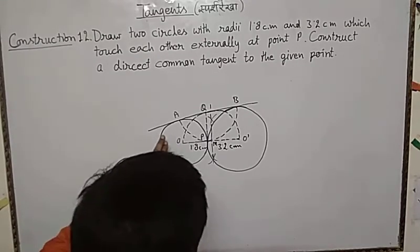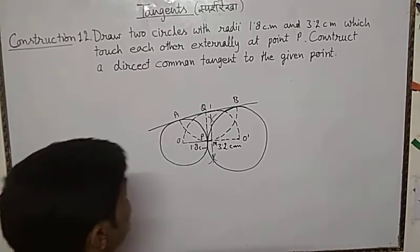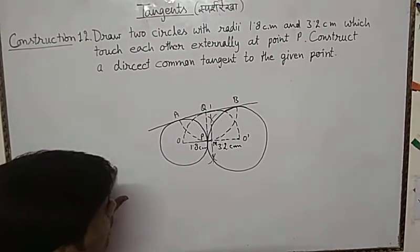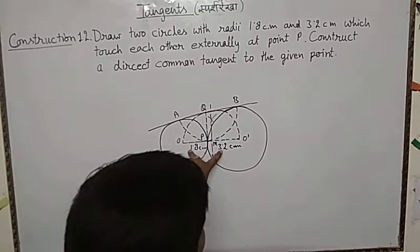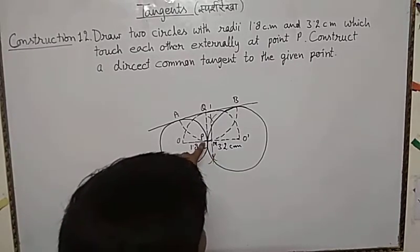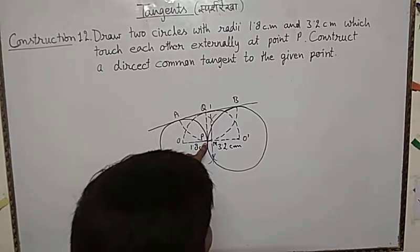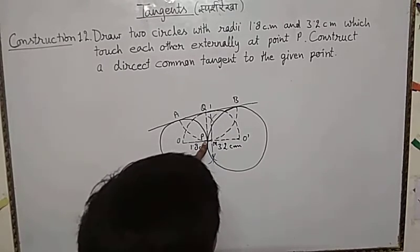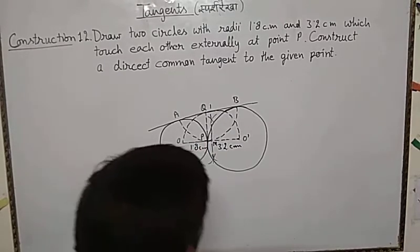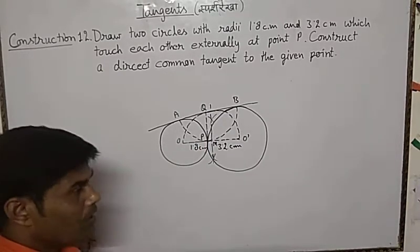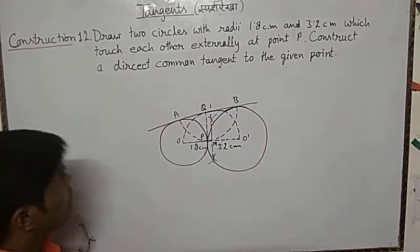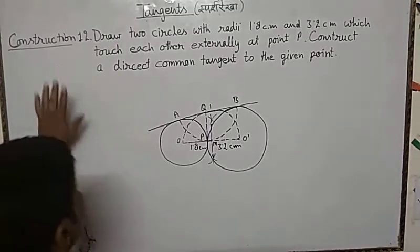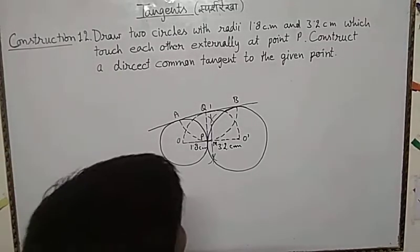This method is used only when the two circles touch each other at a point — at a given point. So your construction is complete when we draw this A and B tangent.